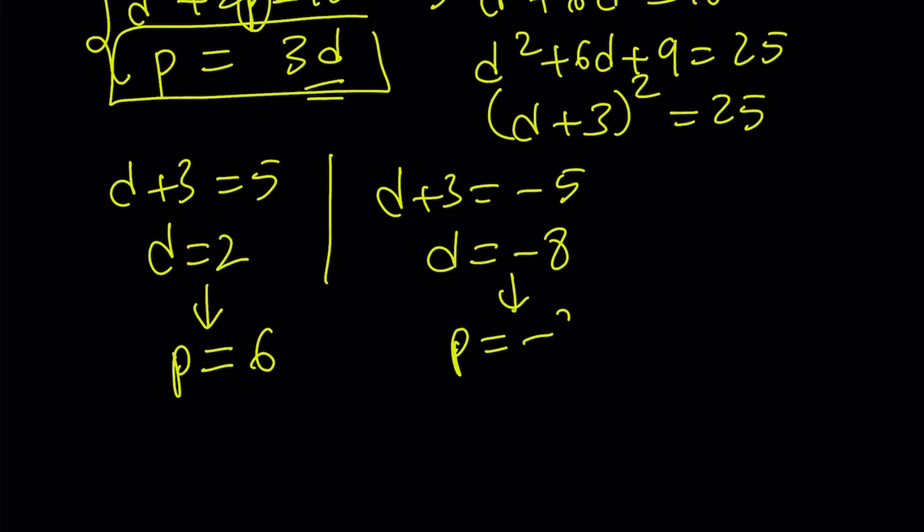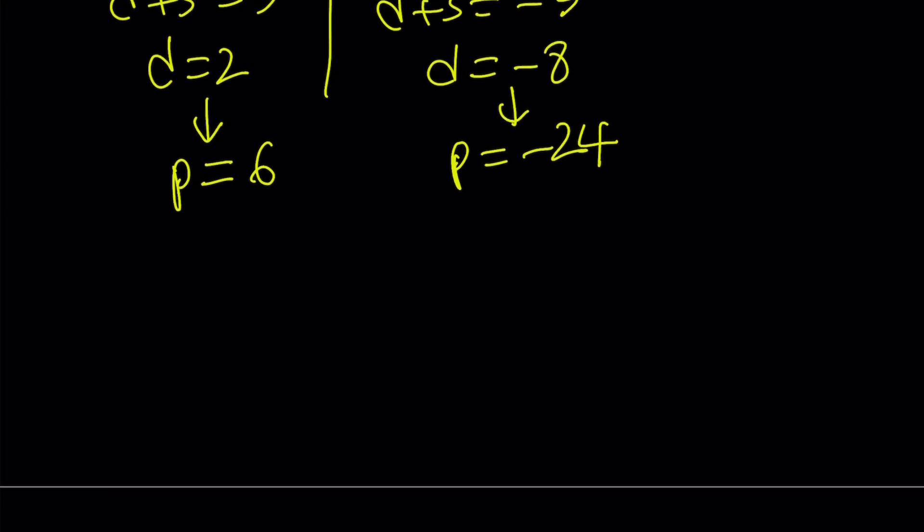And p is negative 24 for here. So that gives us the following systems. x minus y equals 2. And xy equals 6. Or x minus y is negative 8. And xy is negative 24.